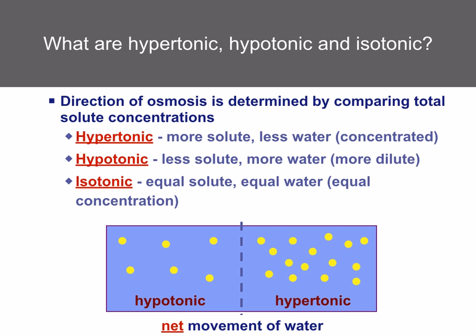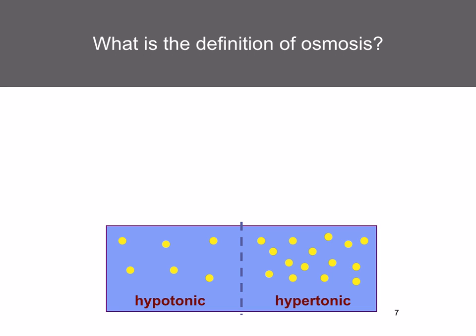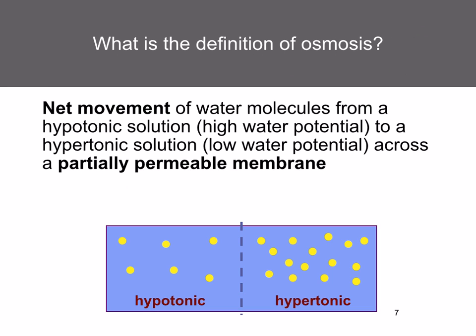Isotonic is when two solutions have equal concentrations. Looking at this diagram, where do you think the water is going to move? The water is going to move to where there's more solute particles — so the net movement of water is from the hypotonic solution to the hypertonic solution. So osmosis is the net movement of water molecules from a hypotonic solution to a hypertonic solution across a partially permeable membrane.